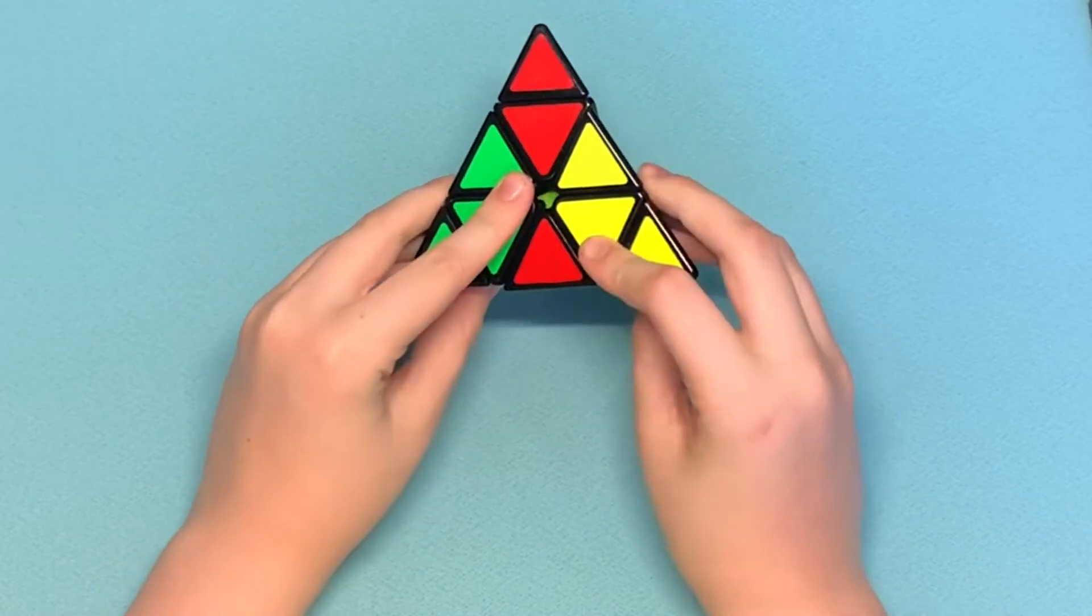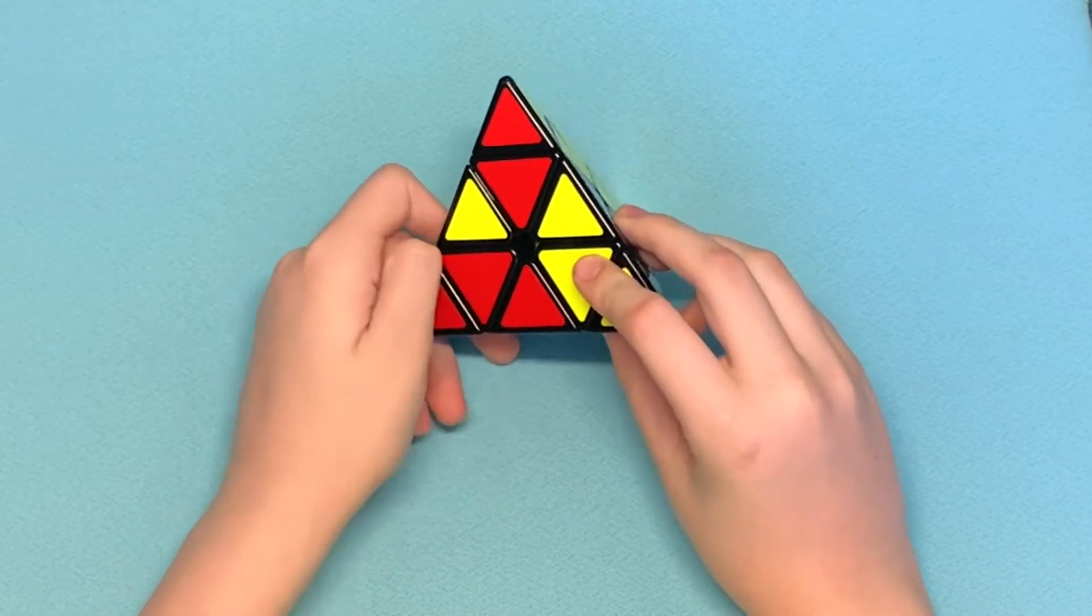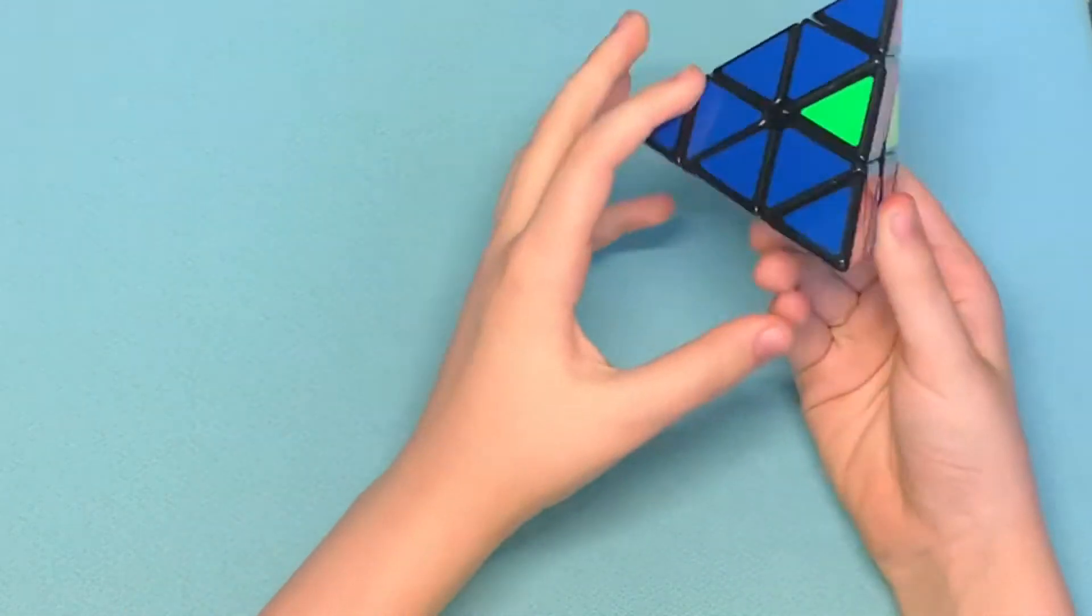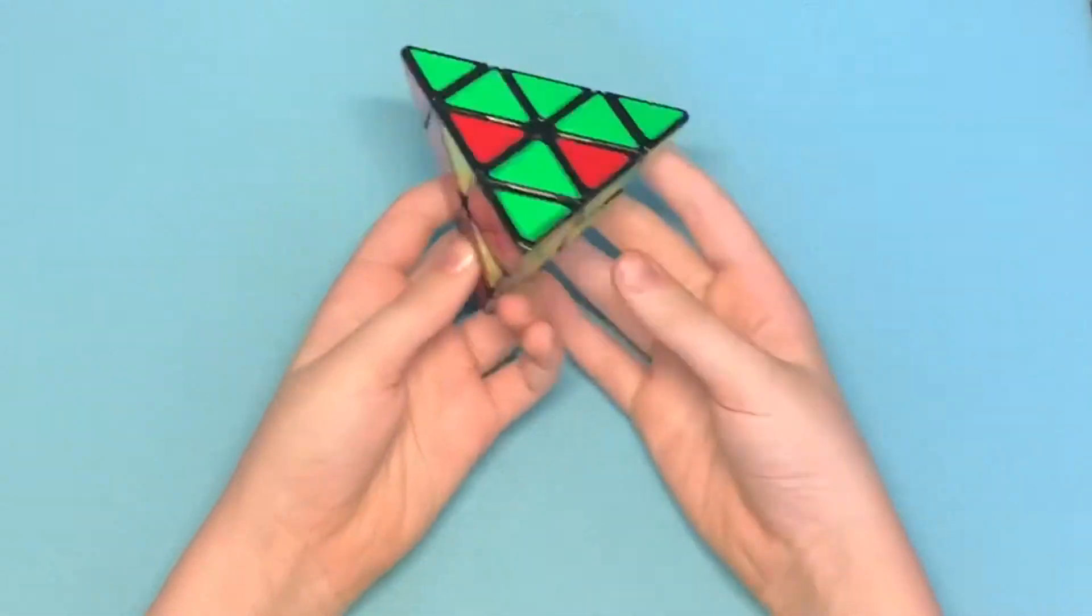is you turn them both down. Make sure you layer it off like that. Turn the first one up and then turn the second one up. Then what you want to do is originally solve your side. But it isn't solved yet.